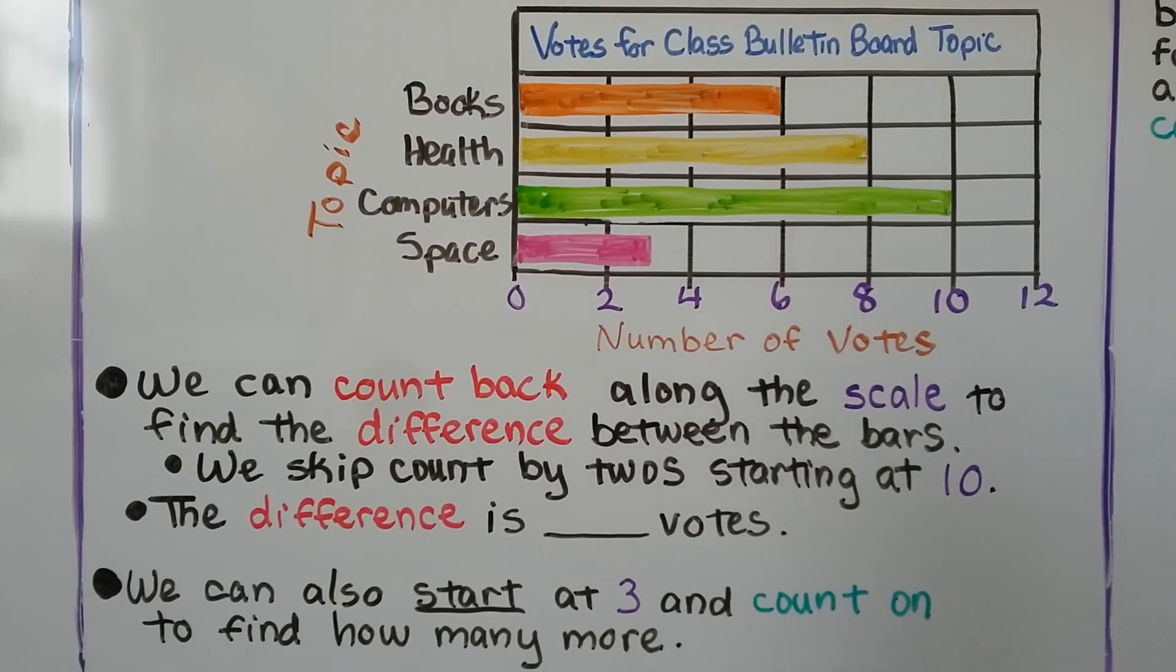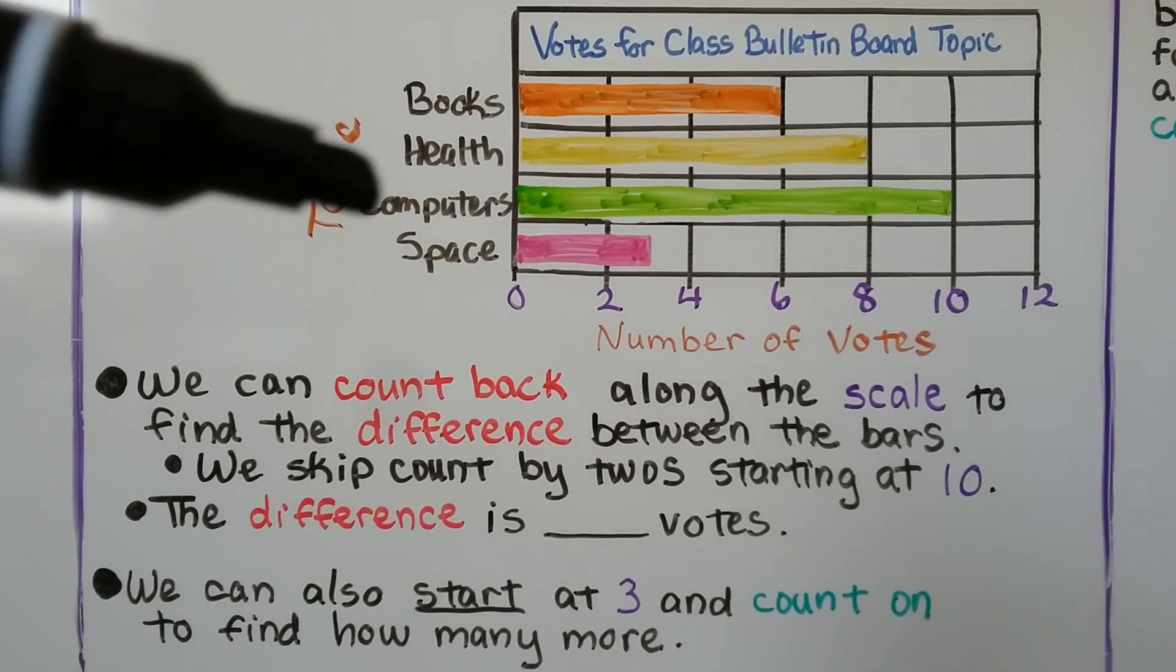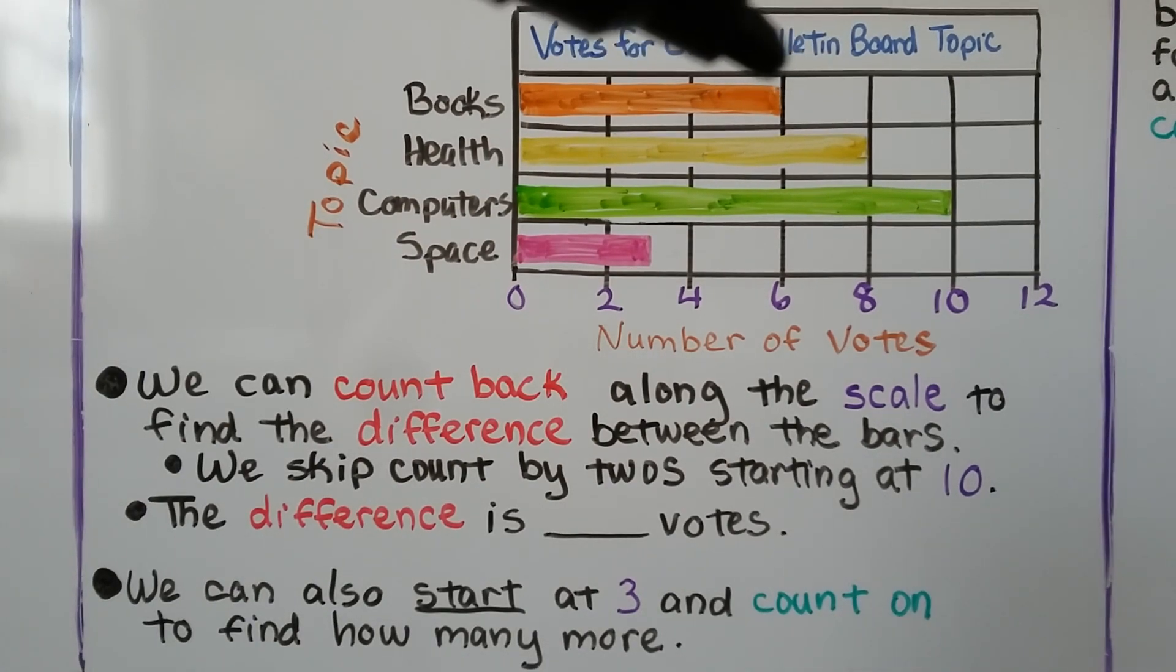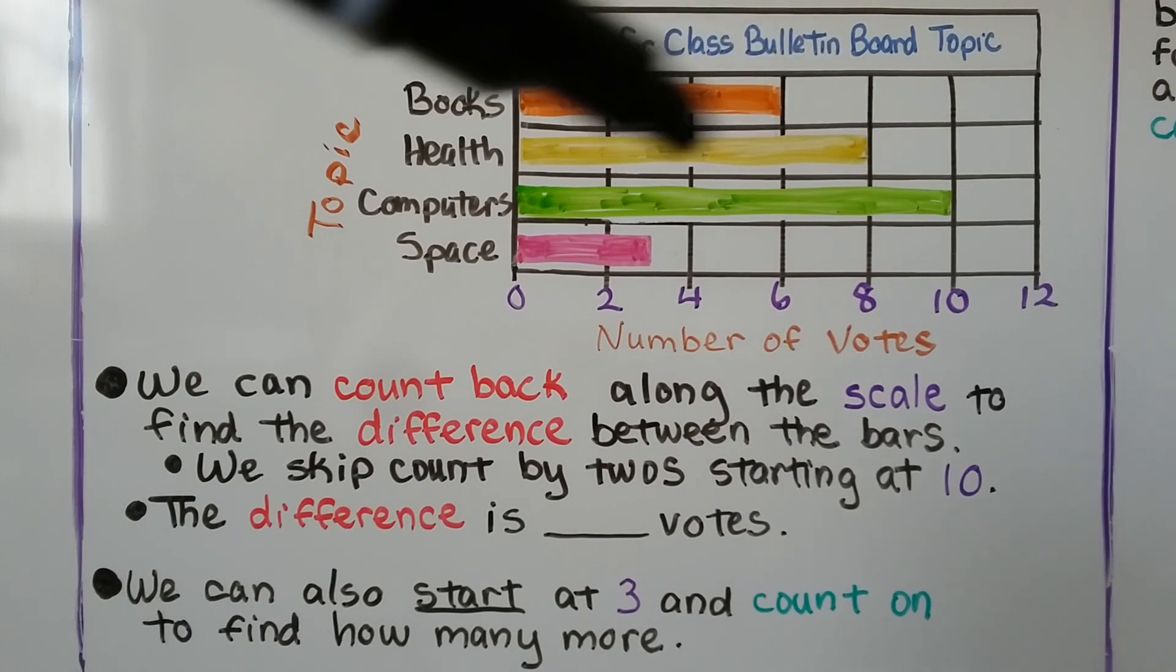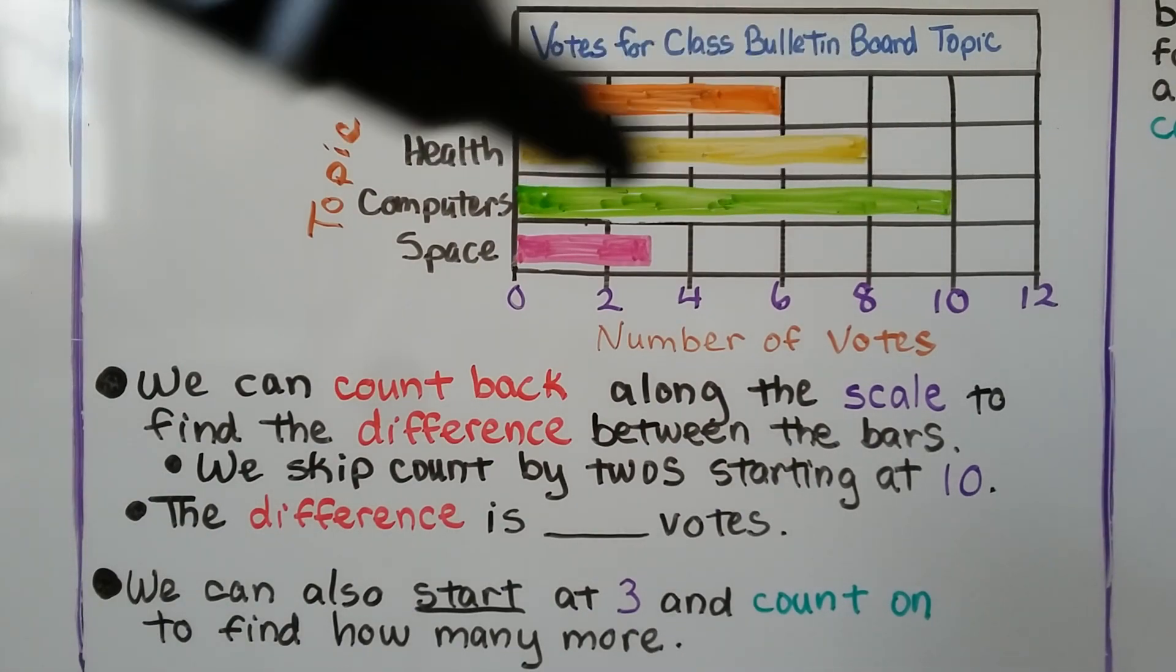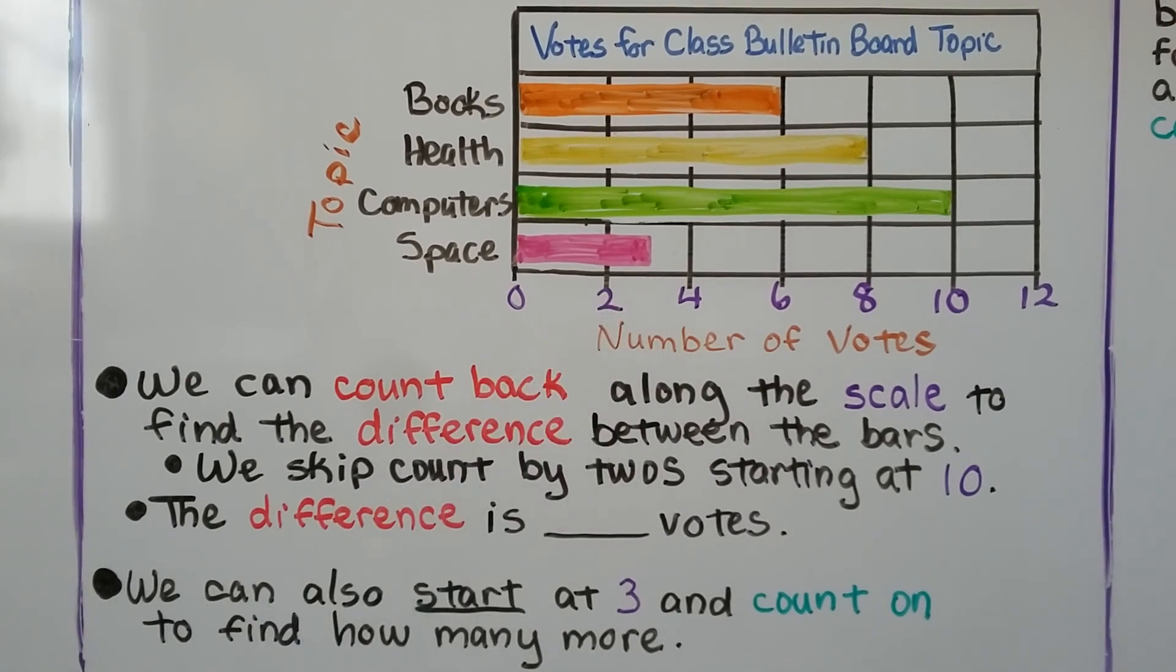So here's our bar graph: Votes for Class Bulletin Board Topic. We can see the topics are books, health, computers, and space. Books are six number of votes, health is eight, computers is ten, and space is in between the two and the four, so it must be a three.